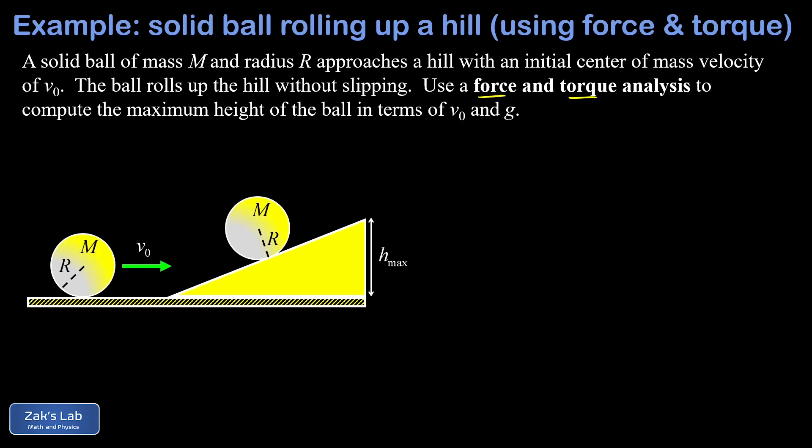We're just going to label all the forces we can think of acting on the ball. So we start with the force of gravity and we've attached that to the center of mass of the ball. Gravity acts at the center of mass and it pulls straight down with a magnitude of Mg.